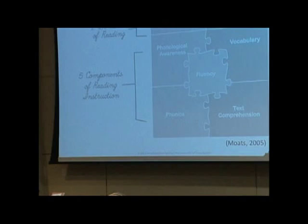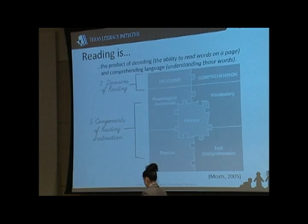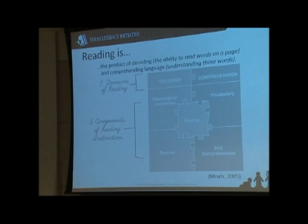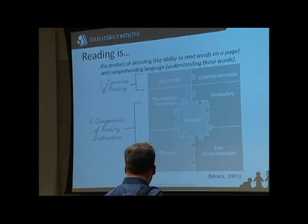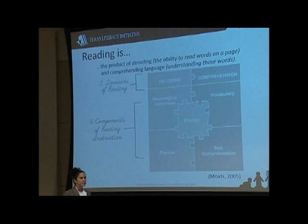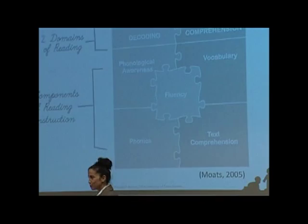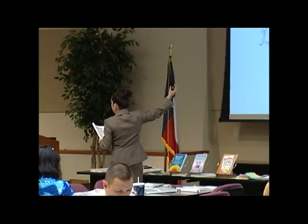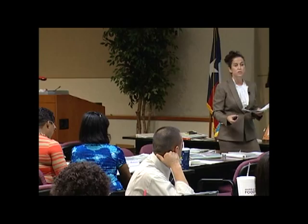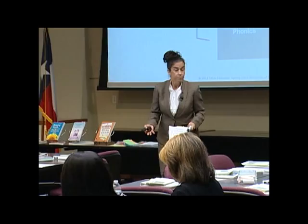Louisa Moats talks about reading as the product of decoding and comprehending language. This puzzle takes that notion and looks at the specific components of reading and how they are interrelated. On the decoding side we have phonological awareness and phonics. Within phonological awareness, sounds are put together to make words and sentences. In phonics, we map graphemes to phonemes. On the comprehension side, we have vocabulary — the meaning of words — and text comprehension, with fluency as the bridge between. We're going to teach you a new word and take it through this puzzle to see how important vocabulary is for comprehension and overall reading.